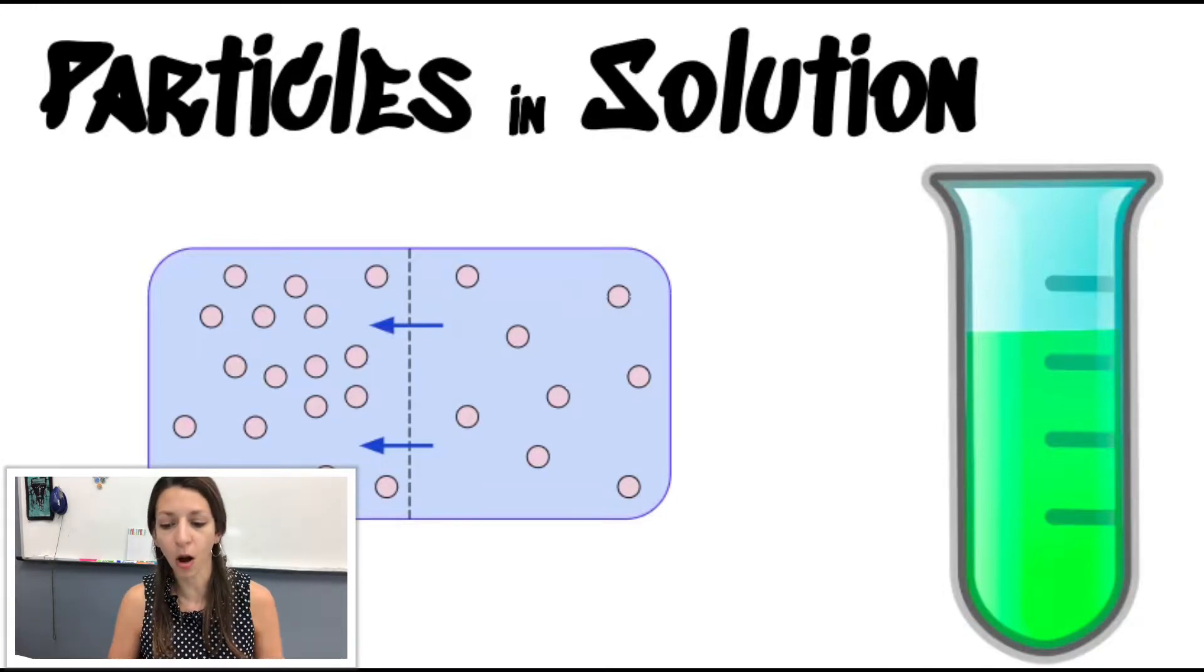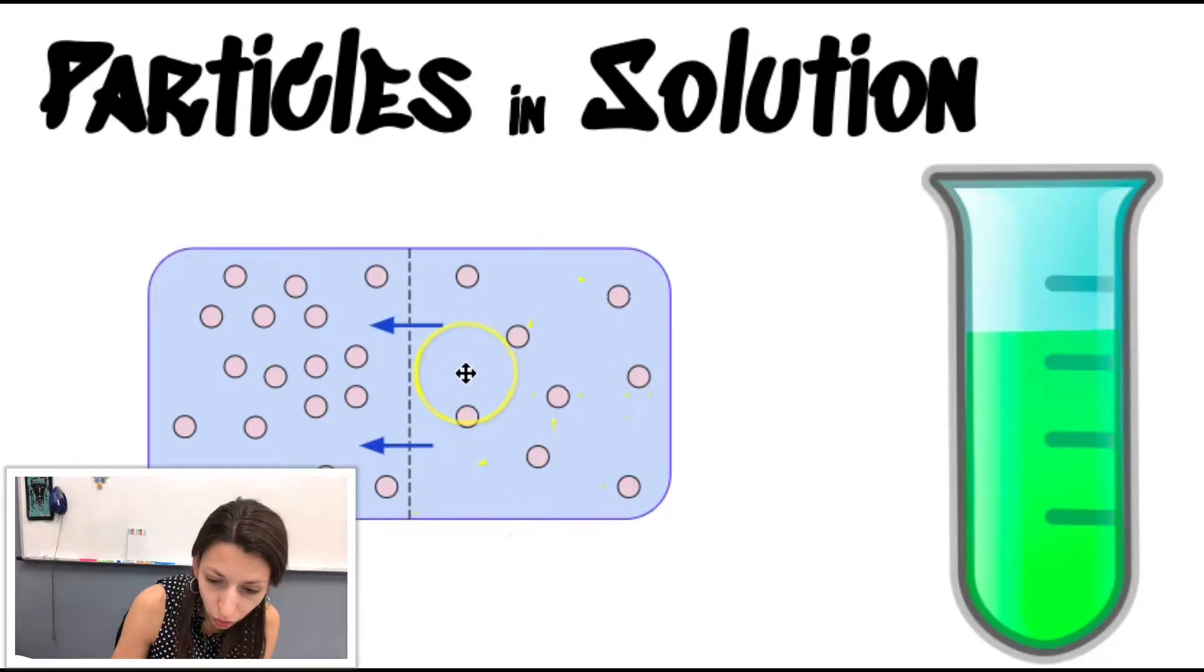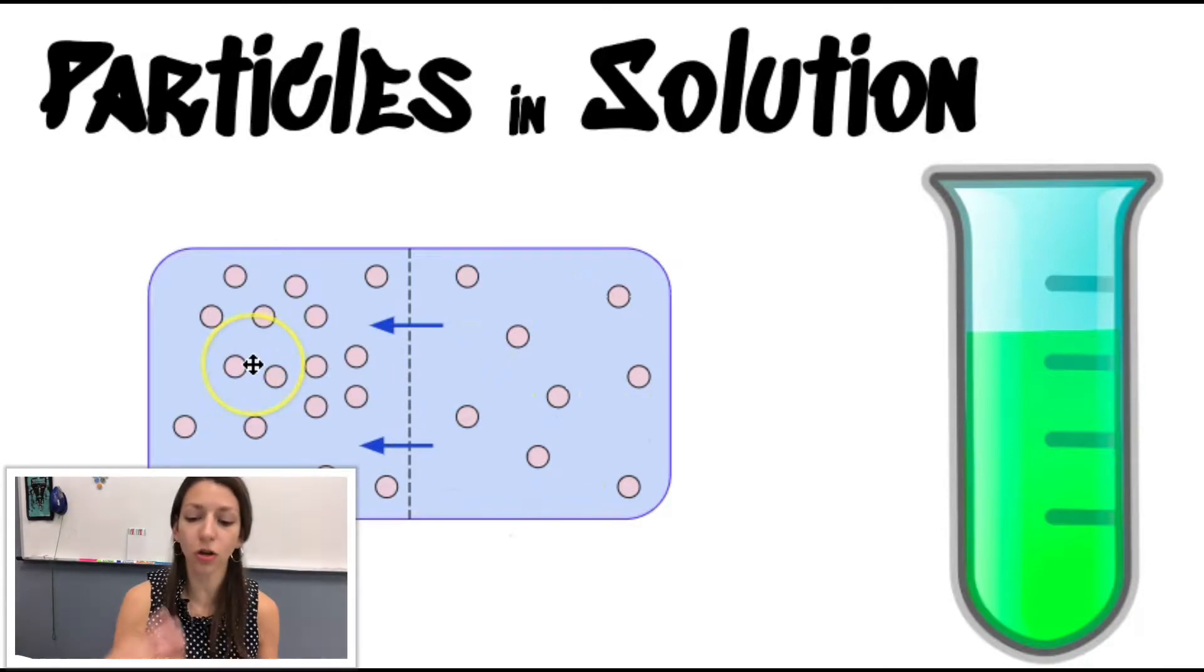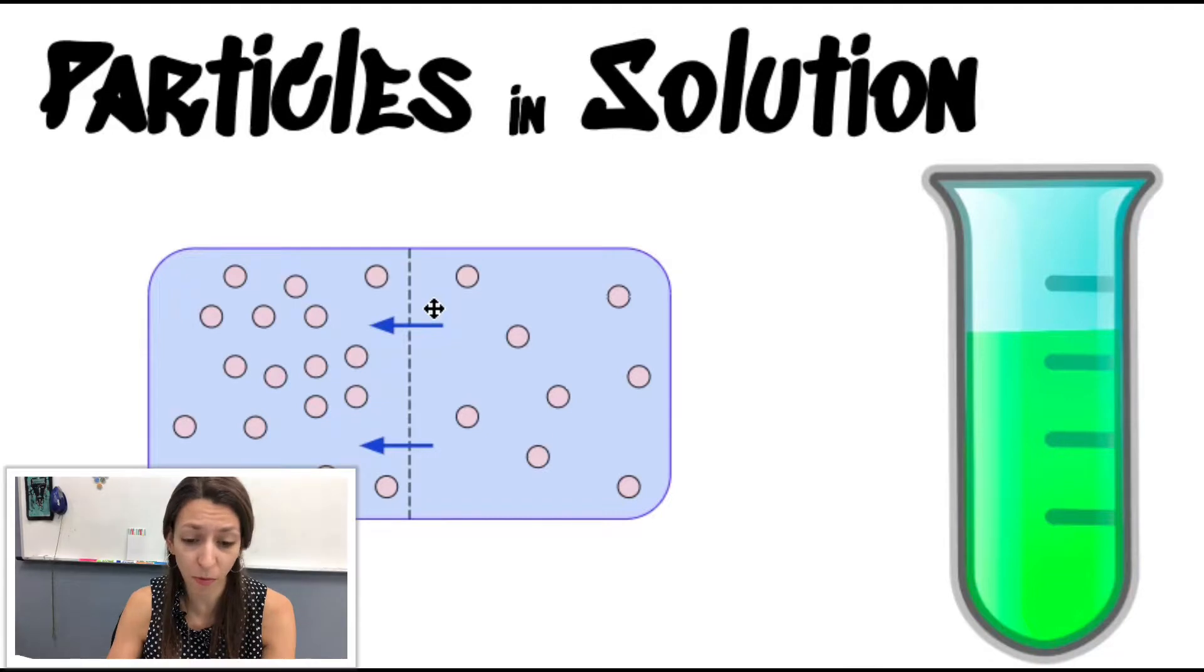So let's go back to molecular movement. Water moves from areas of high potential or high free water concentration. So water is represented by this blue here. To areas of low potential, low free water concentration. So we notice water goes from high to low, just like any other molecule, across a selectively permeable barrier or a semi-permeable membrane.